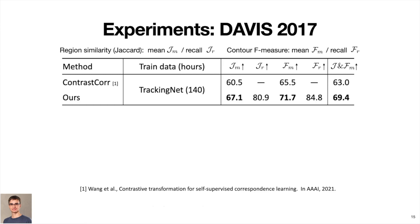We first train on TrackingNet and compared to the work by Wang et al., which used patch-level tracking to obtain positive pairs for contrastive learning. We significantly improved over this work by 6.4% mean J and F score.